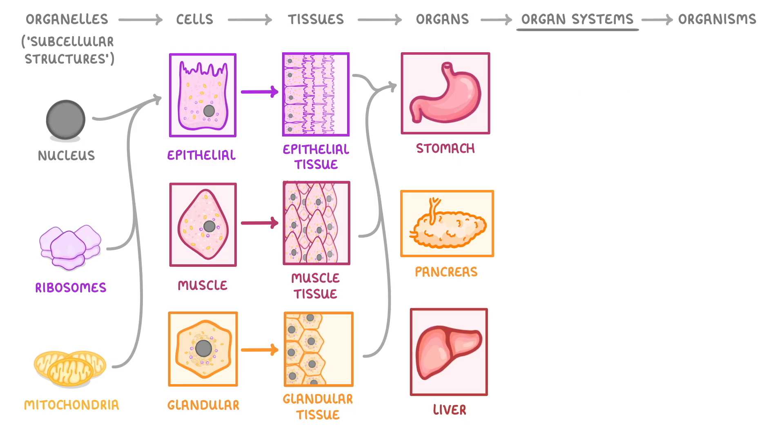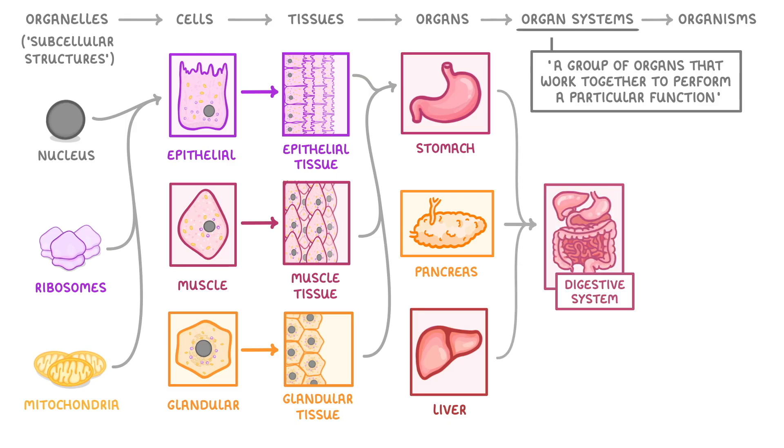Next we have the organ system, which is just a group of organs that work together to perform a particular function. For example, the stomach, pancreas, and liver, taken together with lots of other organs, forms a digestive system, which has the role of digesting the food that we eat and absorbing nutrients.